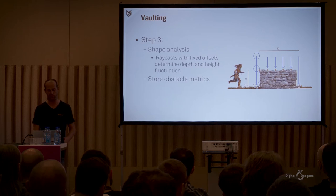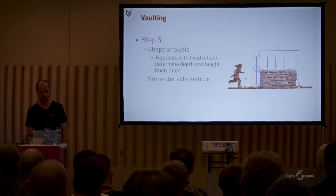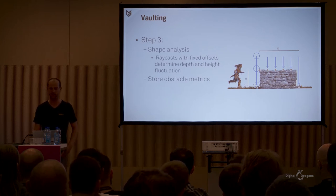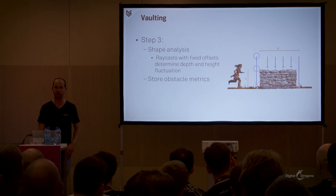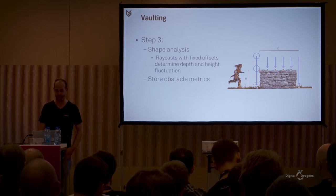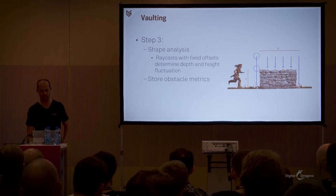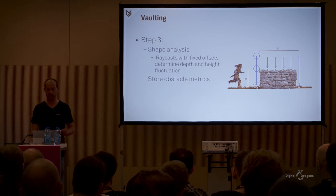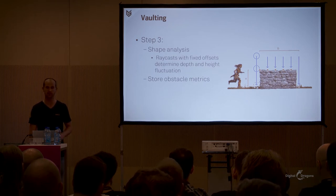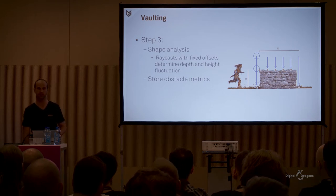For a step off, the same logic is applied as a step on — the only difference is that the intersection position should be lower than Aloy's current position. Once the obstacle shape has been analyzed, we store all metrics of the found obstacle, which allows us to choose a matching animation to trigger.